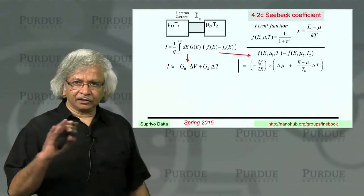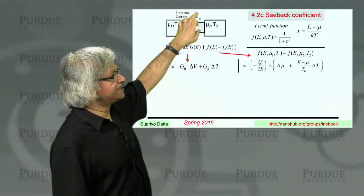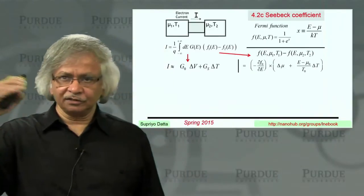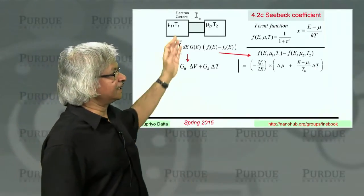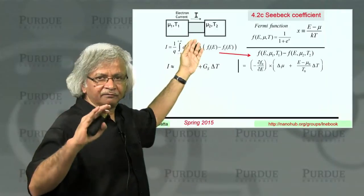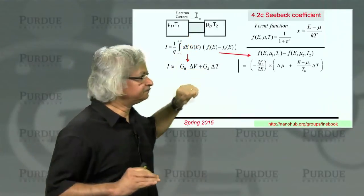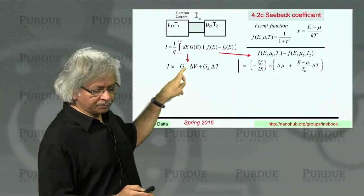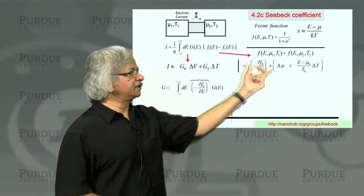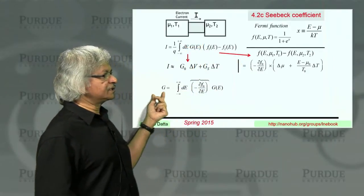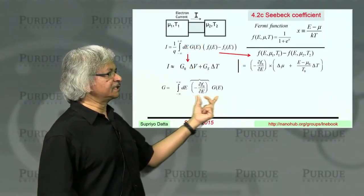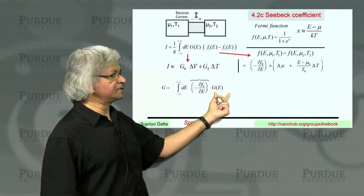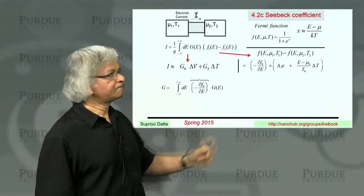And you can now get an expression for this linear response. That is current related to the delta V and delta T. Remember, the convention we're using in all of this is, when we say current, we mean electron current. Actual current is in the opposite direction. Similarly, when you say voltage, you mean electron voltage. Now, how do we get G0? Well, that's what we had done before. When you substitute this quantity in there, you get this conductance, which is this integral over energy with a dF dE times the conductance function.